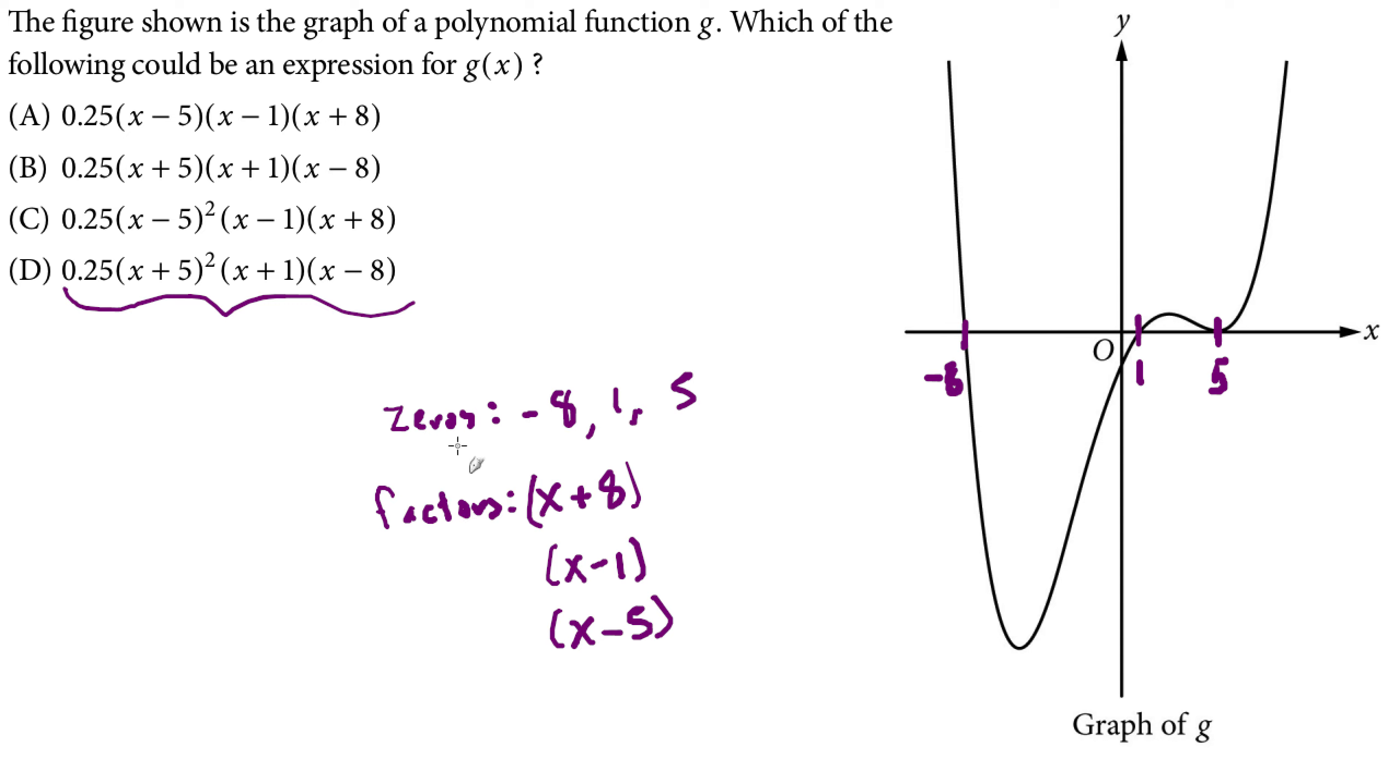One more piece here. So I see that around negative 8, I cross the axis, which means that this must be to an odd power. Around positive 1, I cross the x-axis, that means this must be to an odd power.